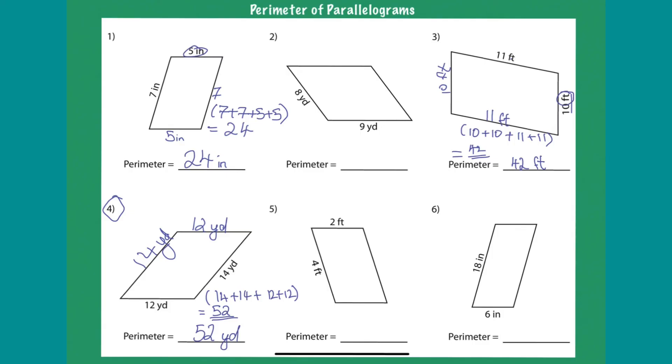And finally, let's try and do question number six. If this is eighteen, this will be eighteen. If this is six, its opposite parallel line will be six. So this is what we mean. Six here. So six inches here and eighteen. So its opposite side is also eighteen inches. So how would you add it together?